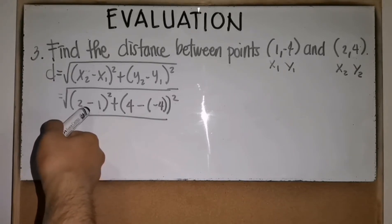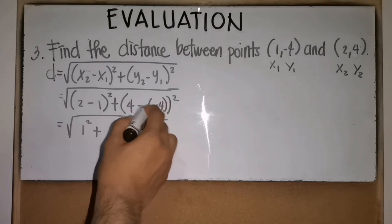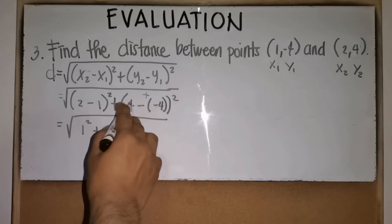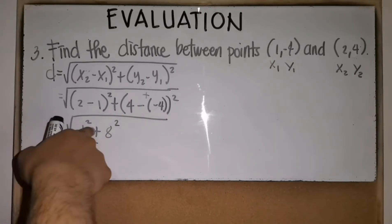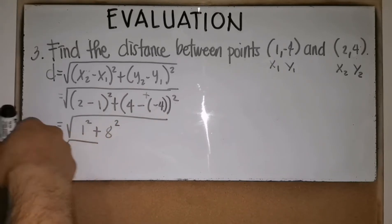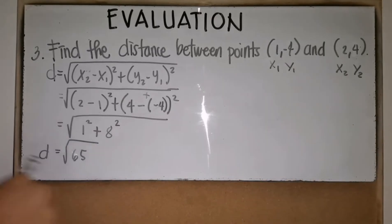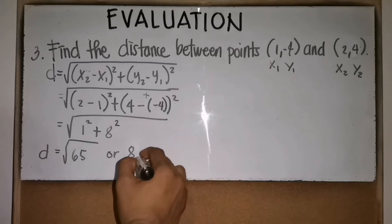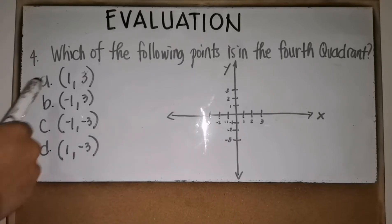Computing: 2 - 1 = 1, and 1² = 1. Then 4 - (-4) = 4 + 4 = 8, and 8² = 64. So d = √(1 + 64) = √65, which in decimal form is approximately 8.06.